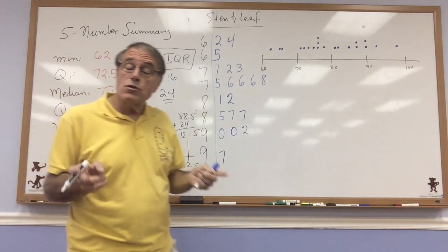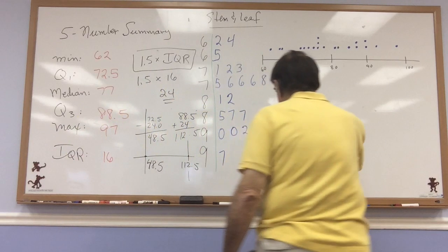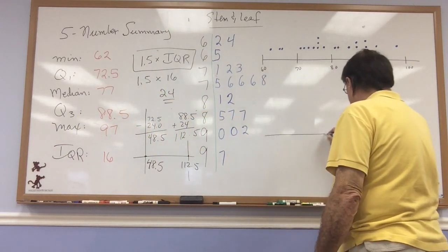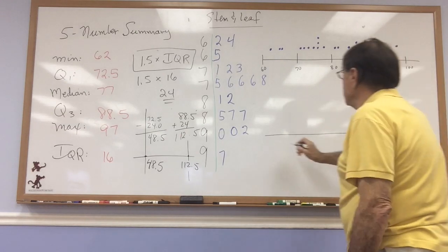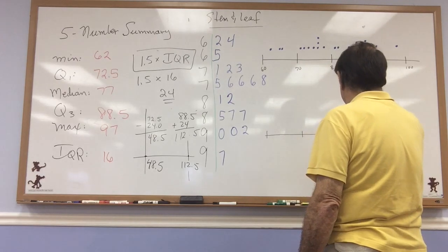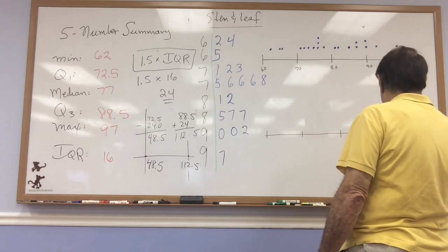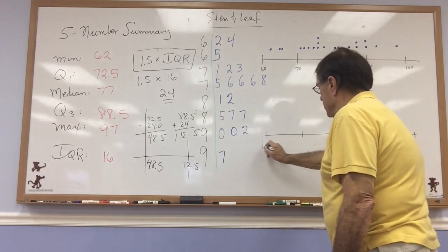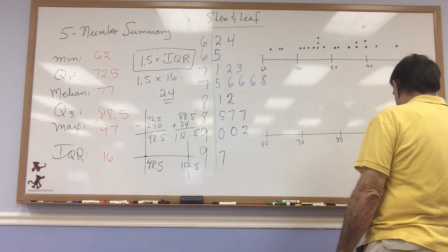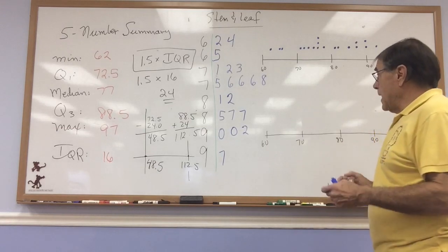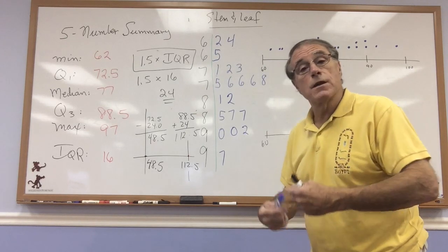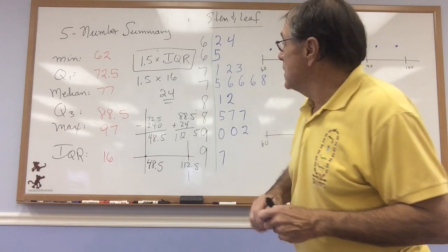So now I'll construct my box plot. Once again, I want a number line. And I want to equally increment from my lowest to my highest point. So this is my number line, 60, 70, 80, 90, and 100. And I'm going to locate my five numbers and use those to construct this box plot.